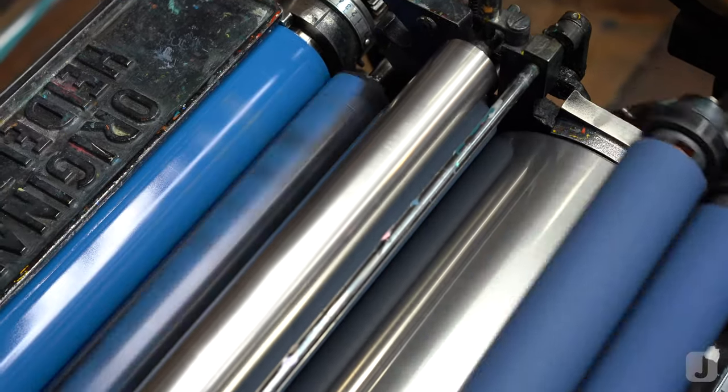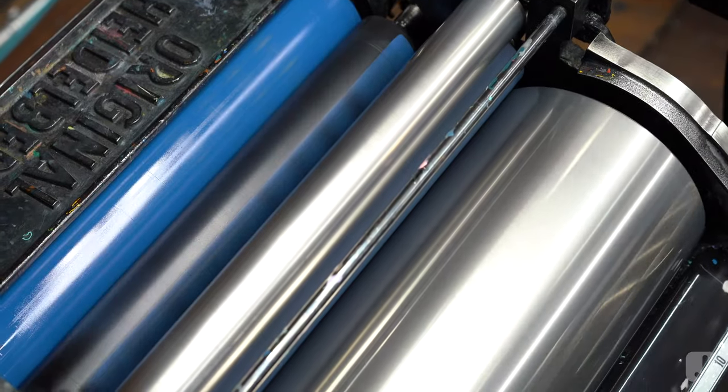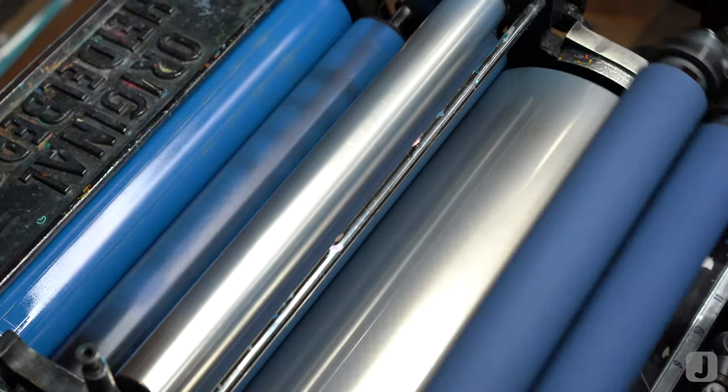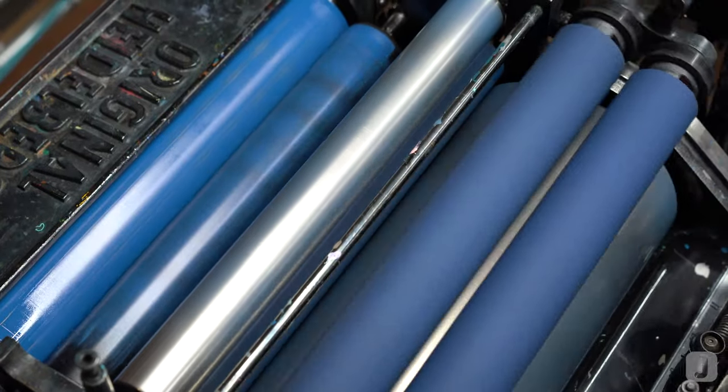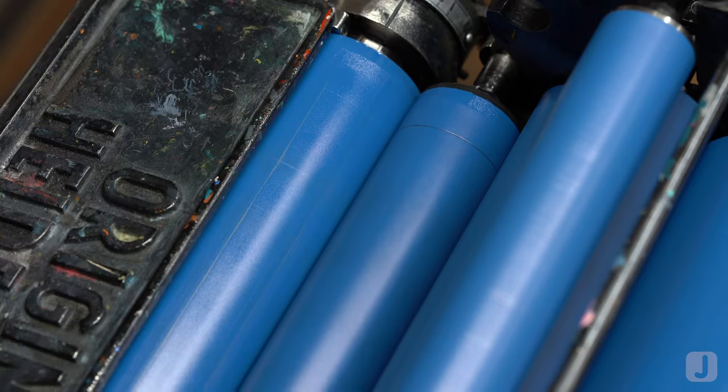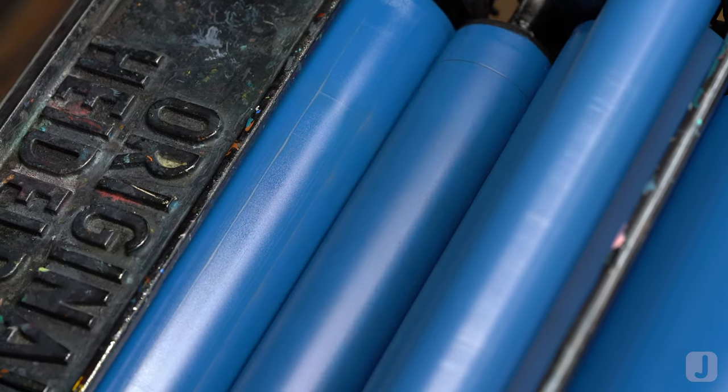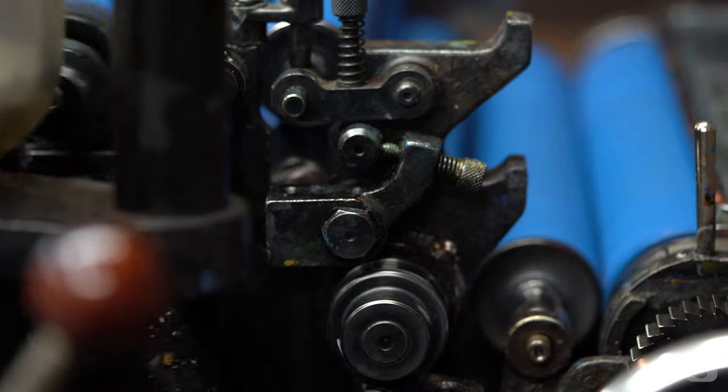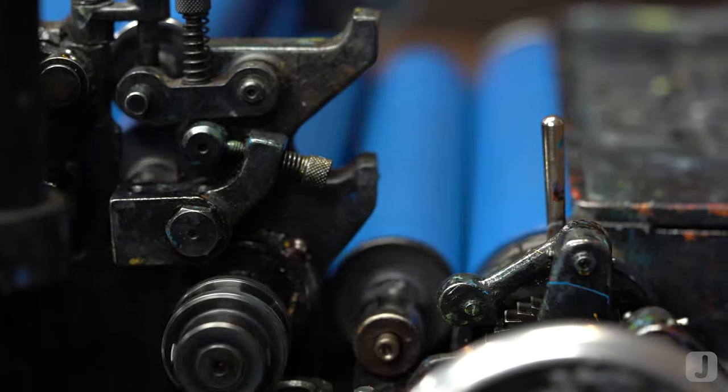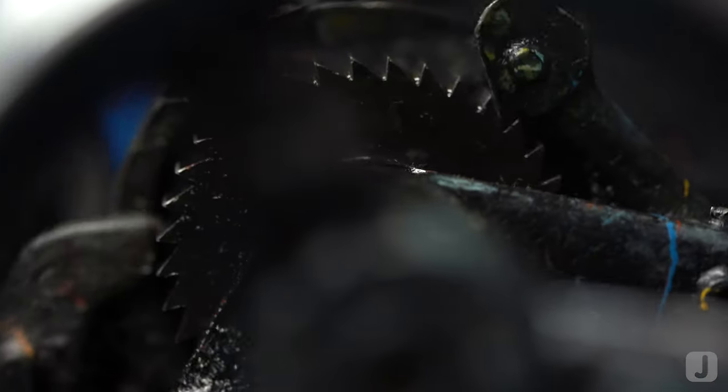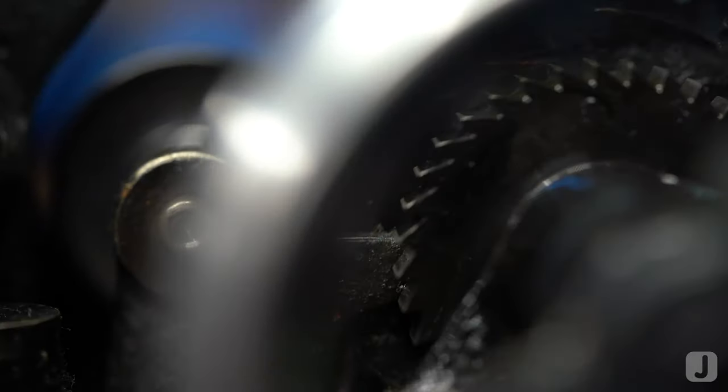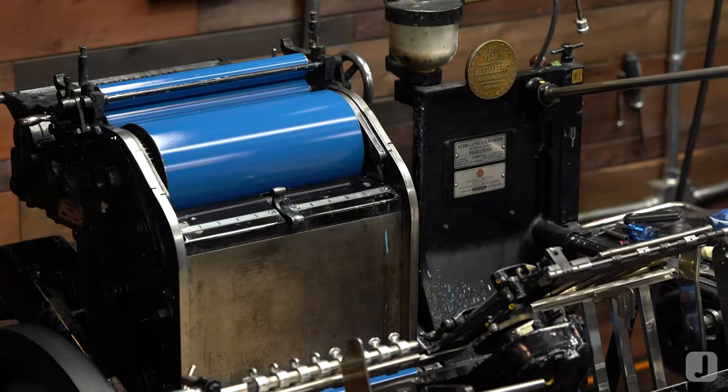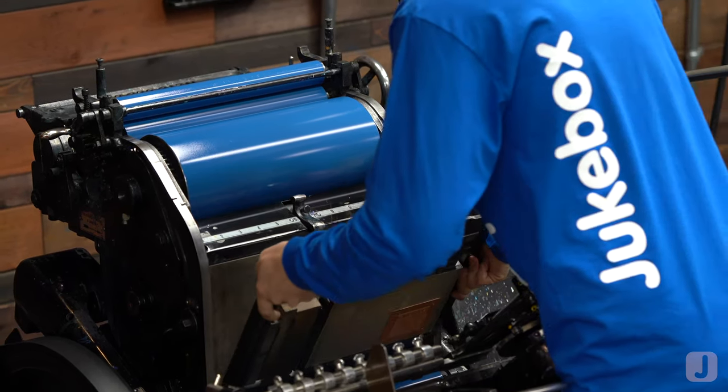I'll warm the ink up and let it move from the well, to the docker roller, to the form rollers and cylinder. Our copper artwork die is positioned on the base and set into place for printing.